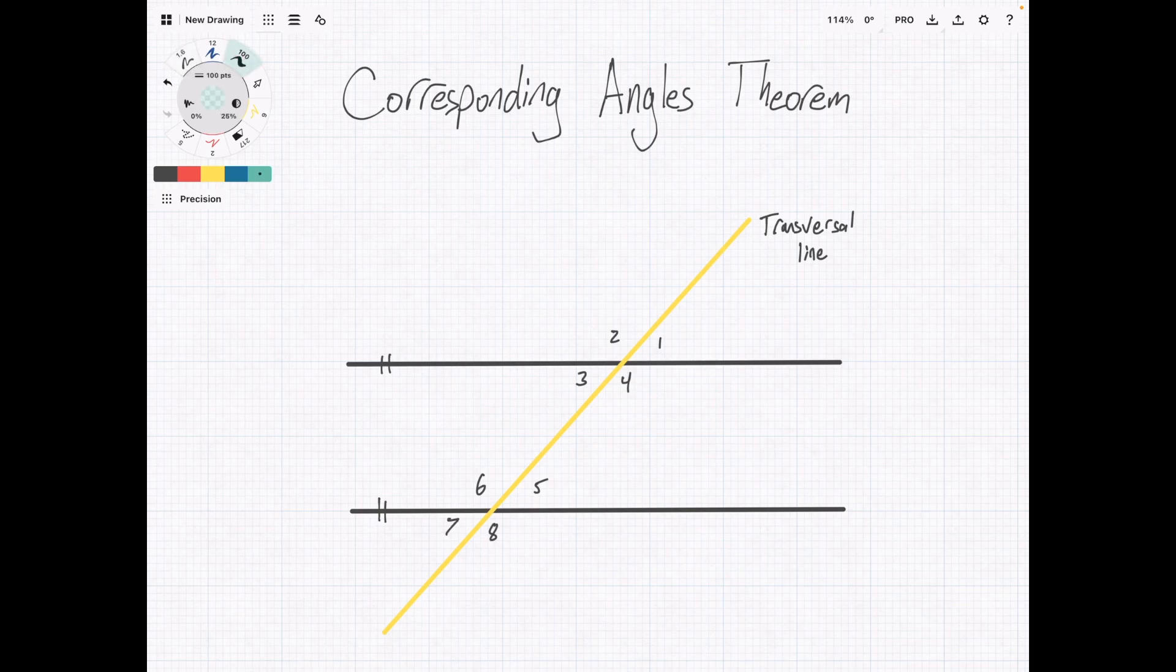The corresponding angles theorem specifically tells you something about the angles around the intersections. So, in this case, angles in the same relative position are corresponding and are congruent. Congruent just means they are equal.